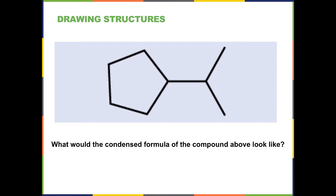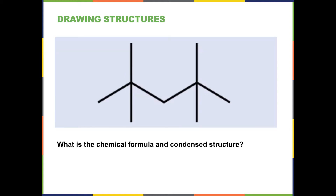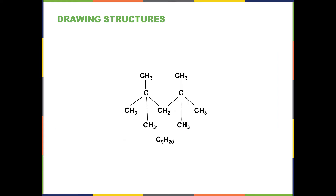Here is the condensed formula for the compound from the previous slide. The ring structure has CH₂ groups except for the one point where three bonds go to various carbons, leaving only one hydrogen. Then there is another carbon with one hydrogen and two branches that have CH₃ groups. This is yet another structural isomer for nonane, with the chemical formula C₉H₂₀.